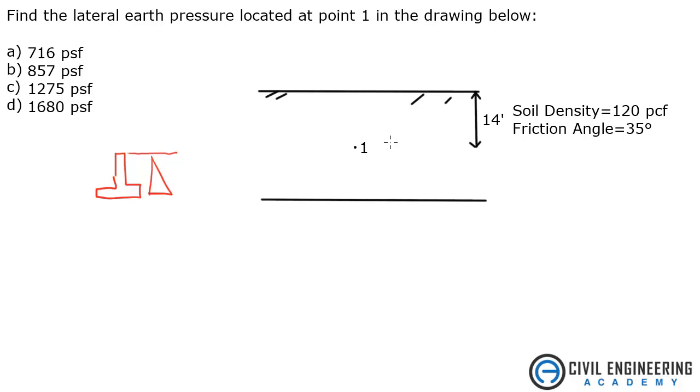So the secret to this problem is you would typically take your density times your depth or the height, but you need to add a K factor. And the question is are you going to add K naught, Ka, or Kp. So you can have active earth pressure coefficient, passive earth pressure coefficient, or at rest. And with this one we will be using at rest because this soil is not moving.